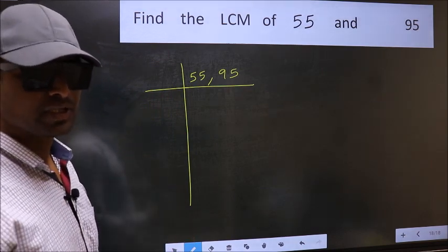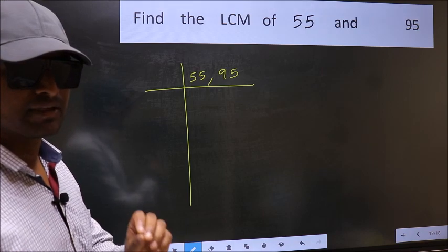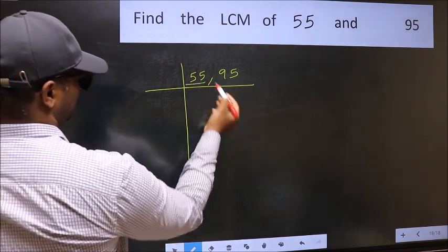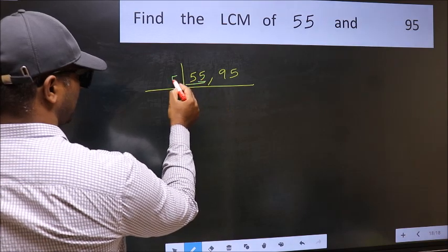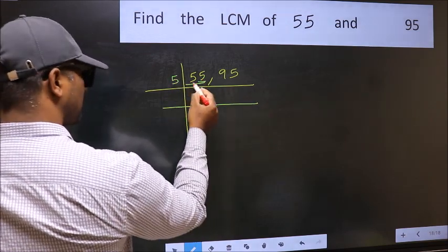Now focus on the first number, which is 55. In this number, the last digit is 5, so take 5.